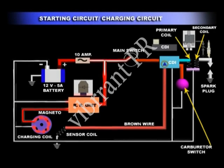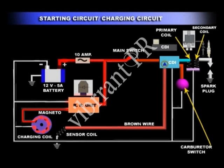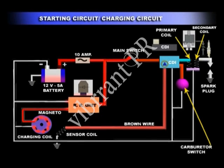Current from the rectifier come regulator unit goes to the battery for charging via a fuse of 10 amperes through the red-white wire. The red-white wire is also connected to the main switch.